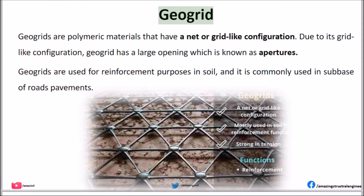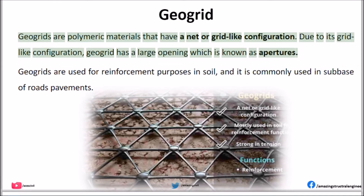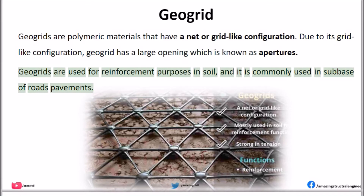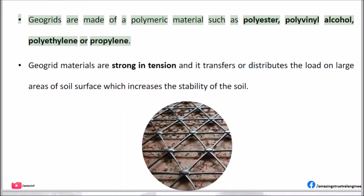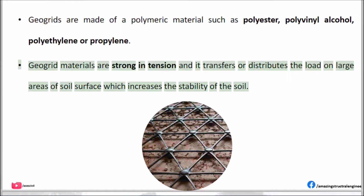Geogrid: Geogrids are polymeric materials that have a net or grid-like configuration. Due to its grid-like configuration, geogrid has large openings known as apertures. Geogrids are used for reinforcement purposes in soil, and are commonly used in the sub-base of road pavements. Geogrids are made of polymeric material such as polyester, polyvinyl alcohol, polyethylene, or polypropylene. Geogrids are strong in tension and transfer or distribute the load over large areas of soil surface, which increases the stability of the soil.